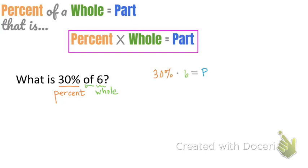To solve this one, all we have to do is multiply 30% times 6, and we get 1.8. Let's try another.